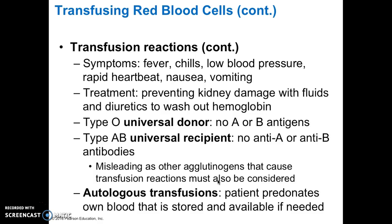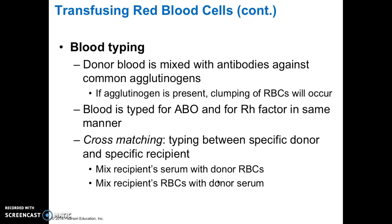As mentioned before, type O is the universal donor and type AB is the universal recipient. Autologous transfusion is when a patient pre-donates their own blood, which is stored and available if needed. For blood typing, donor blood is mixed with antibodies against the common agglutinogens — if the agglutinogen is present, clumping of the red blood cells will occur. The blood is typed for ABO and RH factor in the same manner. Cross-matching is typing between a specific donor and recipient: the recipient's serum is mixed with donor red blood cells, and the recipient's red blood cells are mixed with the donor's serum.